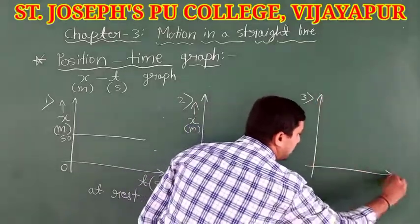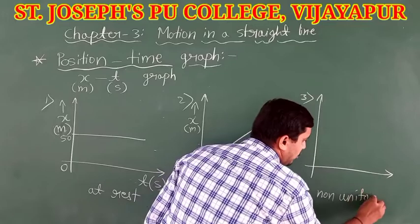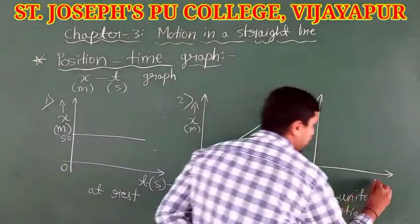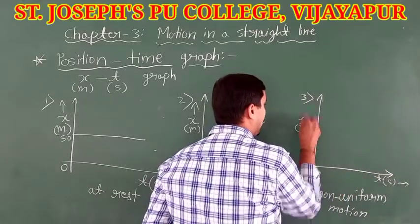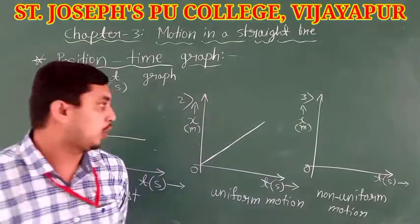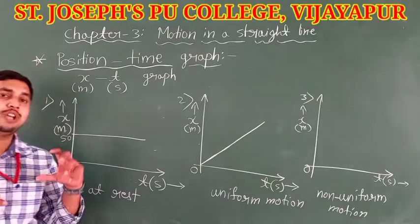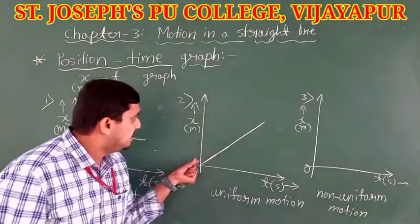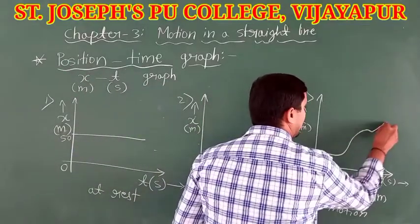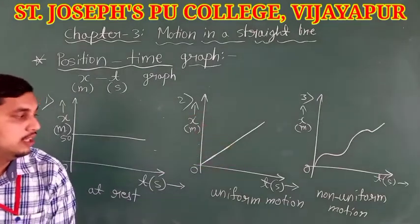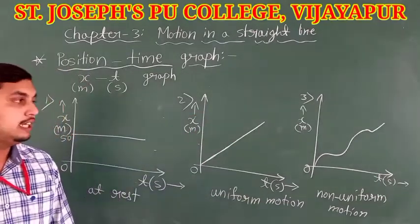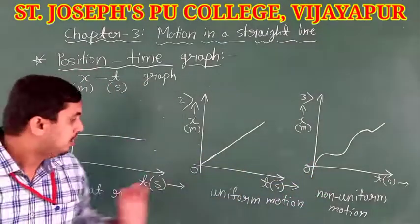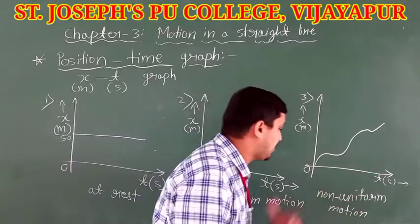Next is non-uniform motion. The X axis, Y axis, and origin representations are very important here. Non-uniform motion means an object covers equal distance in unequal intervals of time. The curve is not a straight line — it is a curved line starting from the origin. This is the graphical representation of motion in different cases: at rest, uniform motion, and non-uniform motion.